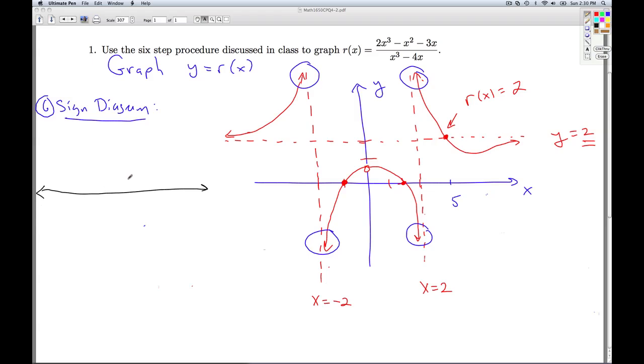So in a polynomial function, we would just have to find the zeros of the function, where the x-intercepts would be. But with a rational function, you need to look for not only where the function equals zero, but also where the function does not exist.